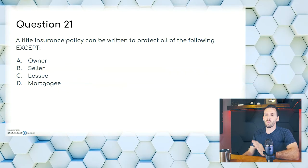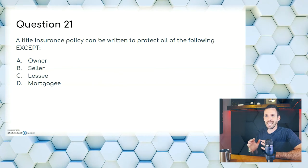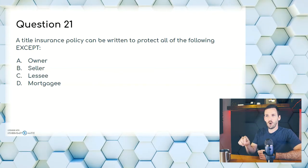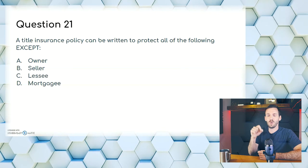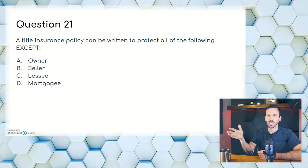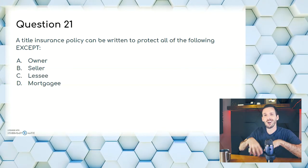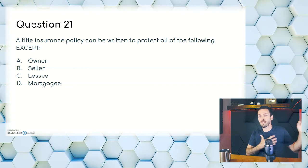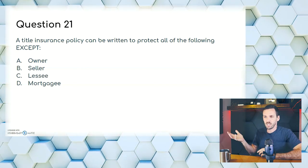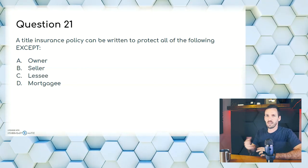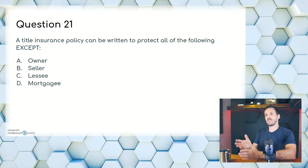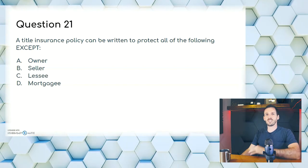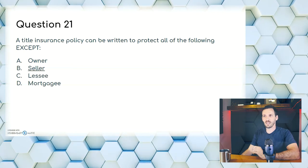Question twenty-one: a title insurance policy can be written to protect all of the following except — A, owner; B, seller; C, lessee; or D, mortgagee. The policy is to protect the current owner, the lessee if renting, and the mortgagee — the one providing the loan. The seller is not the one who gets the policy; it's for the buyer. Answer is B, seller.